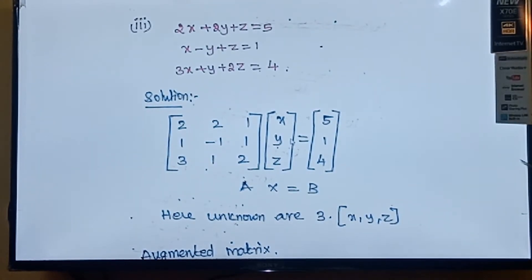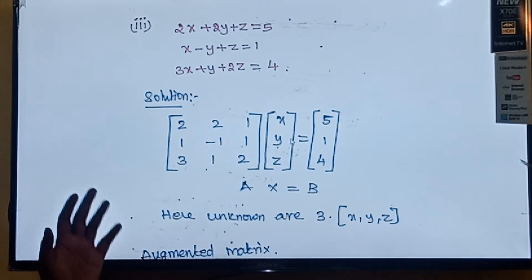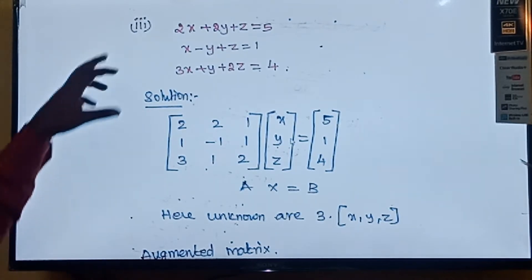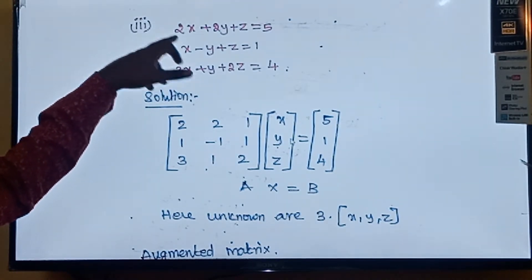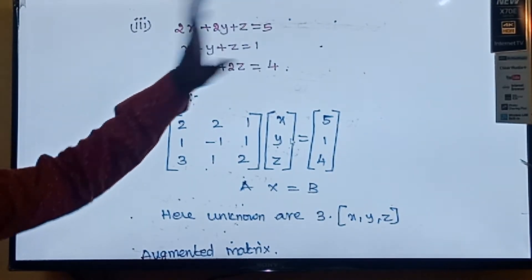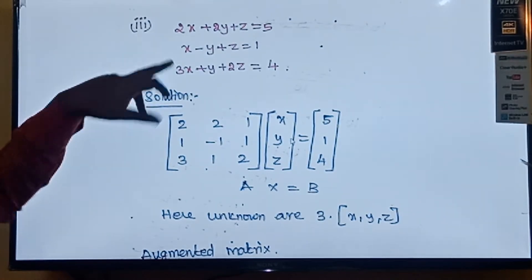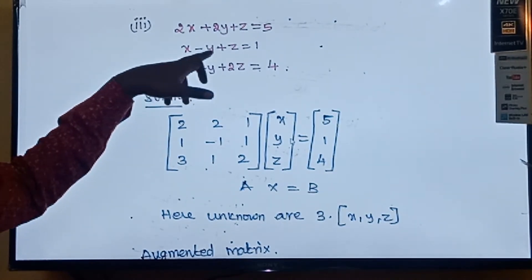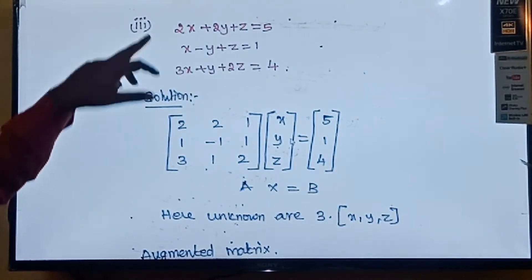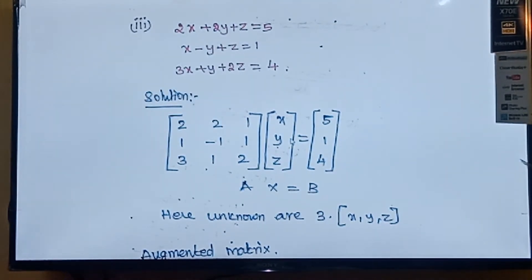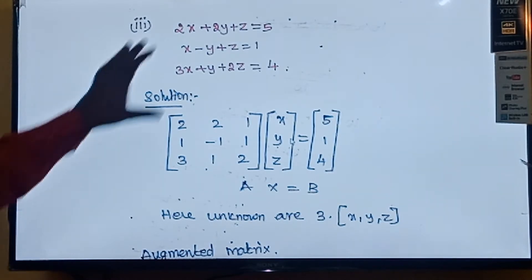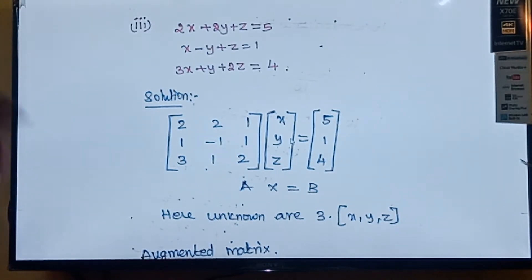Very good morning students. Now we are going to see the topic: the Rouché–Capelli theorem. The system of equations is: 2x plus 2y plus z equal to 5, x minus y plus z equal to 1, 3x plus y plus 2z equal to 4. These are the linear equations.